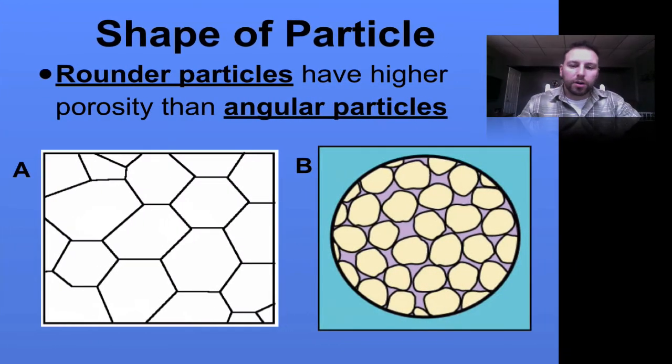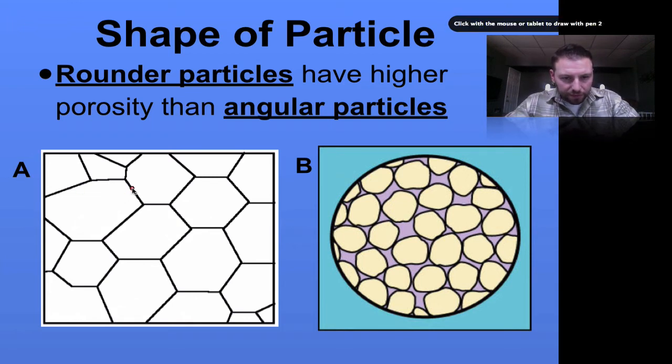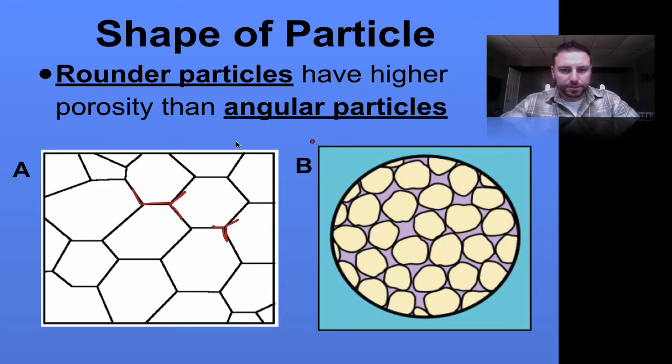The shape of the particle will have an effect on our porosity. On the left, angular particles can fit together, which decreases porosity. Rounded particles leave spaces between, which increases porosity. So here we have an increase in porosity, and here a decrease.